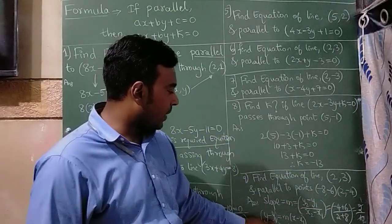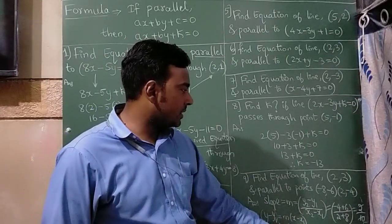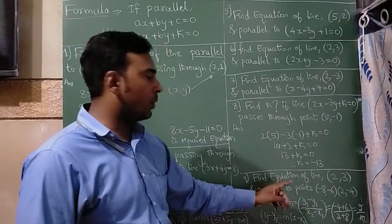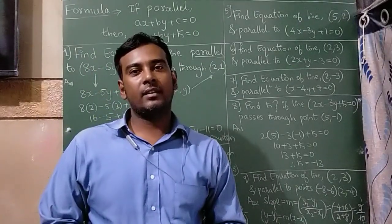So y minus y1 is 3 and m is 1 by 5. x minus 2 is x1. So further if you simplify you will get the equation of the line. I hope you all understood perfectly. Thank you very much.